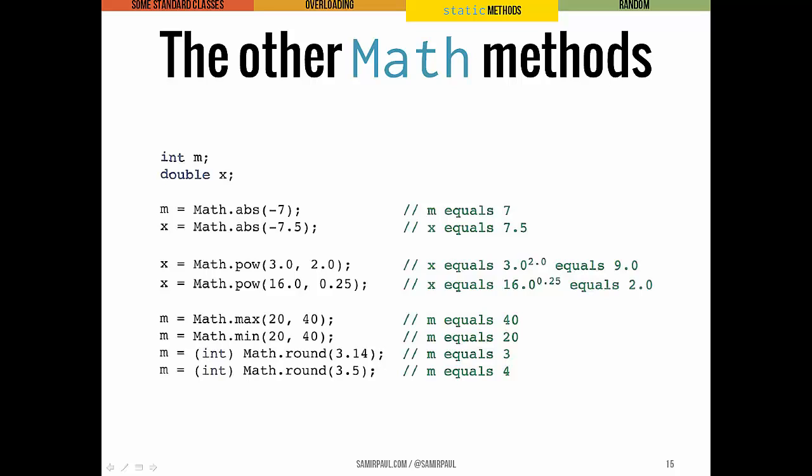So that means that this method, round, takes in a double input and it returns a long input. That means that later, after we get that long return value back,